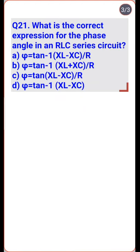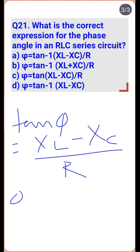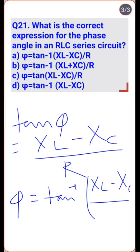For the phase angle in an RLC series circuit, from the impedance triangle: tan φ = (XL − XC)/R, so φ = tan⁻¹[(XL − XC)/R] — option A is the right one.